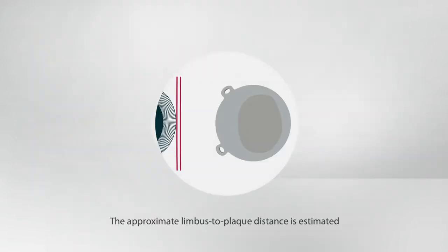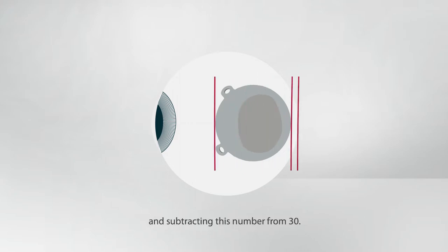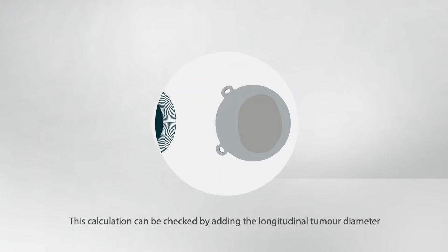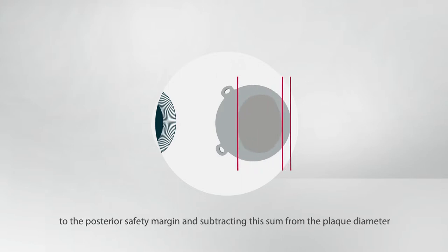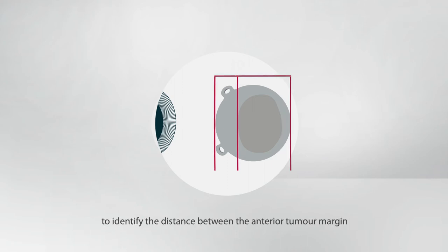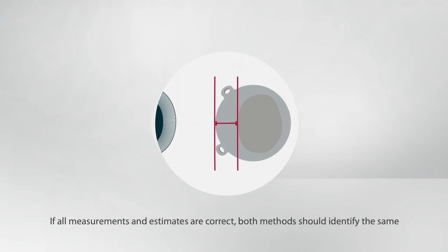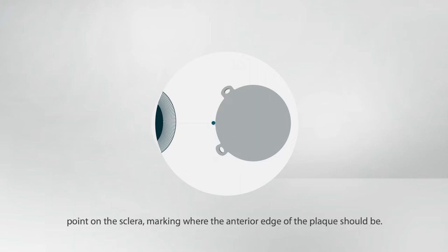The approximate limbus to plaque distance is estimated by adding the plaque to fovea distance to the plaque diameter and subtracting this number from 30. This calculation can be checked by adding the longitudinal tumor diameter to the posterior safety margin and subtracting this sum from the plaque diameter to identify the distance between the anterior tumor margin and the anterior plaque edge. If all measurements and estimates are correct, both methods should identify the same point on the sclera, marking where the anterior edge of the plaque should be.